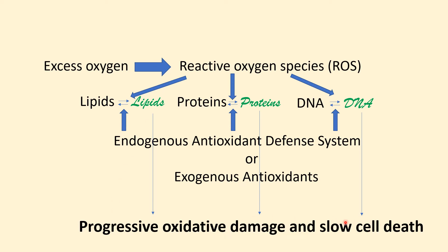This is a slow process that takes many months. There's an endogenous antioxidant defense system that can repair the damage, but in RP retina the amount of reactive oxygen species overwhelms the defense system. One thing that can turn the tide is exogenous antioxidants that are ingested — they can bolster the defense system and reduce the oxidative damage that can prevent cone cell death.